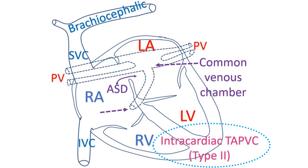The intracardiac variety drains into the coronary sinus, the vein returning blood from the heart into the right atrium. Intracardiac means within the heart, as all pulmonary veins drain directly into the vein of the heart itself and not outside the heart as in other varieties.